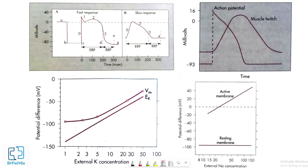For understanding the transmembrane potential and resting membrane potential in cardiac muscle, we have to understand this figure first. This figure shows changes in transmembrane potential recorded from fast response and slow response cardiac fiber in isolated cardiac tissue immersed in electrolyte solution. At time A, the microelectrode was in the solution surrounding the cardiac fiber. At time B, the microelectrode entered the fiber. At time C, an action potential was initiated in the impaled fiber.